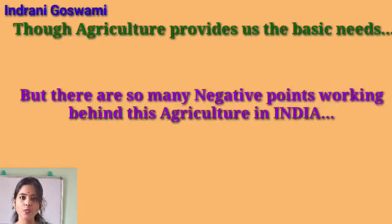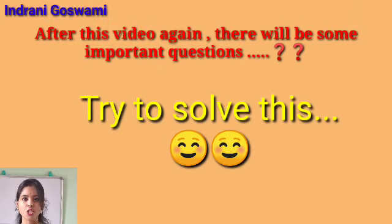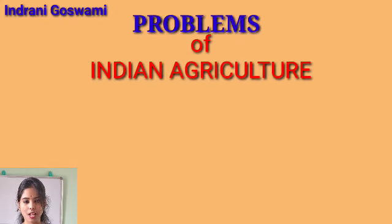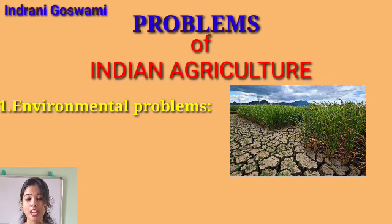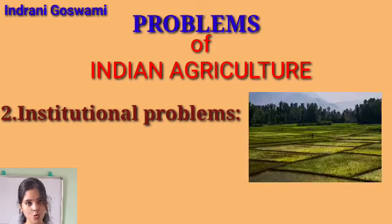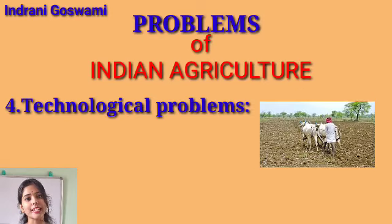There are so many plus points for Indian agriculture but so many negative points as well. After this session I am going to put some important questions related to Indian agricultural problems. Now, in your book the problems are divided into four parts: number one, environmental problem; number two, institutional problem; number three, economic problem; and last but not the least, technological problem.